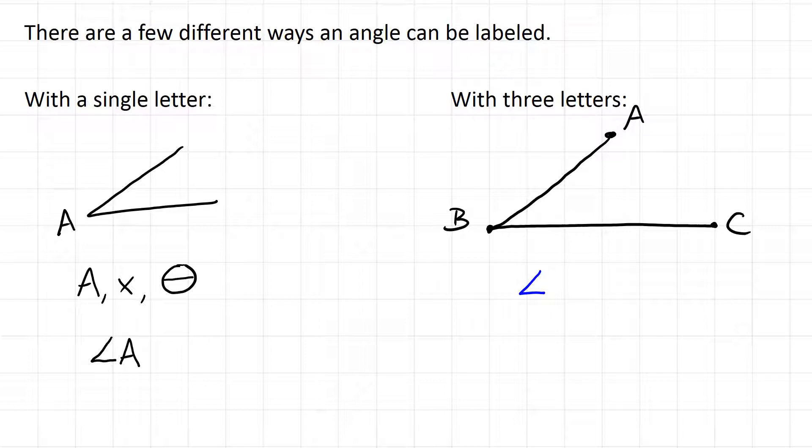So one way to write this angle here is to write angle ABC. And what that means is going from A down to B, and then across to C, that angle between those is the angle we're talking about.